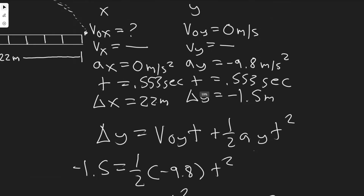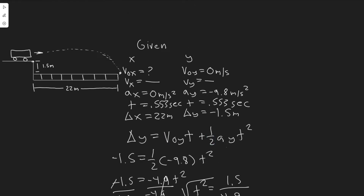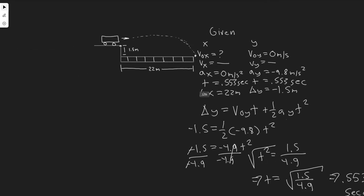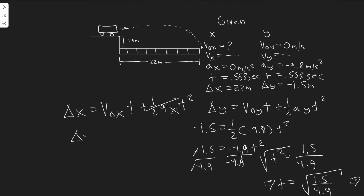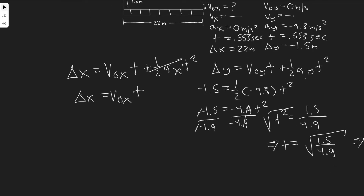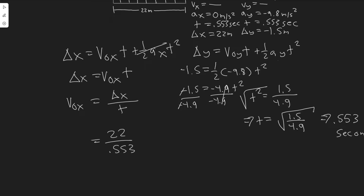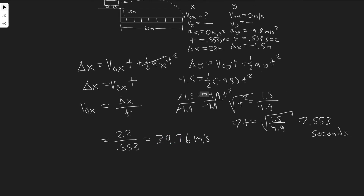Now we know t is 0.553 seconds. We're going to use the same formula but in the x direction: delta x equals v sub zero x times t plus one half a sub x times t squared. There's no acceleration in the x, so that term goes to zero. The distance we travel equals the initial velocity times t. So the initial velocity equals delta x divided by t. Delta x was 22, dividing by 0.553, you get 39.76 — so about 40 meters per second. That's the velocity we need to leave with.